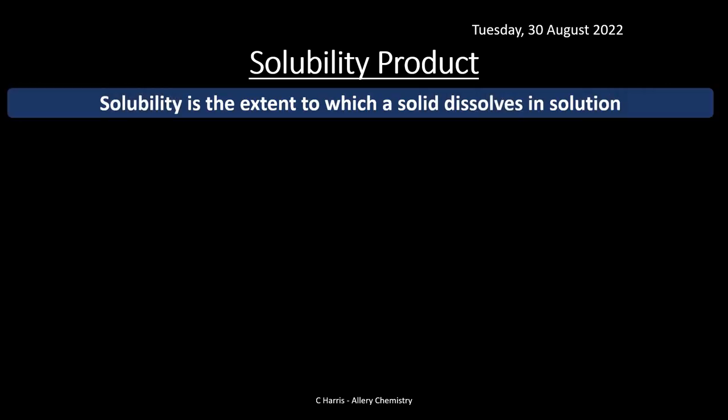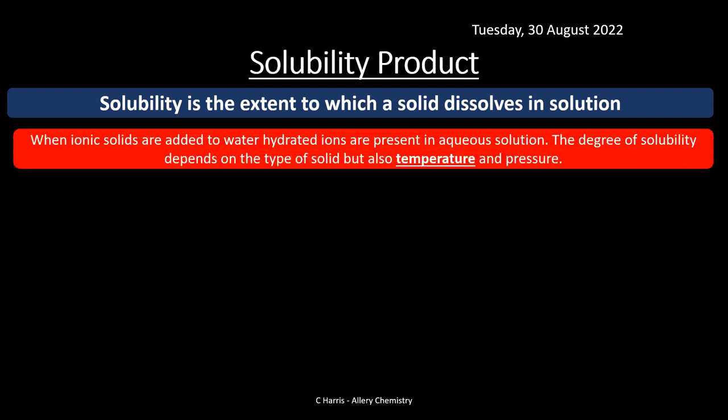Let's move on to the final section: solubility products and the common ion effect. Solubility is the extent to which a solid dissolves in solution. When ionic solids are added to water, hydrated ions are present in aqueous solution — this was covered in topic 23. The degree of solubility depends on the type of solid, temperature, and pressure. There will come a point where the water can no longer hold any more solid — this is saturation — and additional solid added won't dissolve.